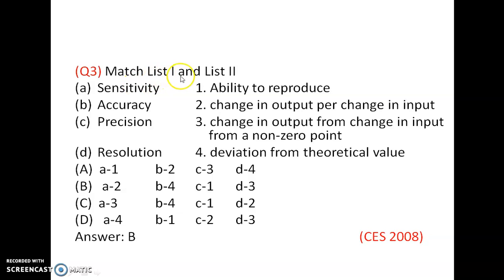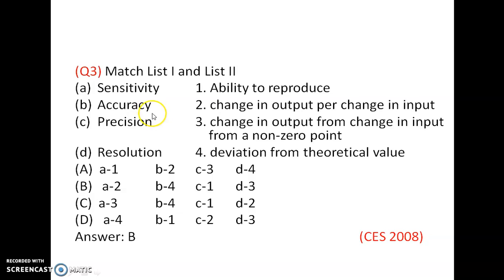Third question: Match list 1 and list 2 — sensitivity, accuracy, precision, resolution. Sensitivity is a change in output per change in input. Accuracy is a deviation from the theoretical value — how the measured value differs from the theoretical value. Precision is the ability to reproduce again and again. So C corresponds to 1 and D corresponds to 3.